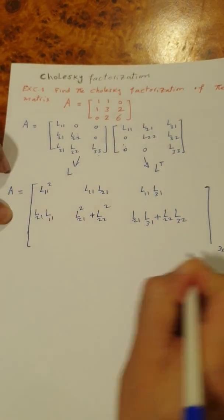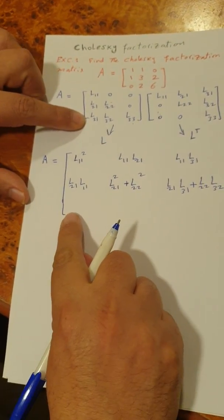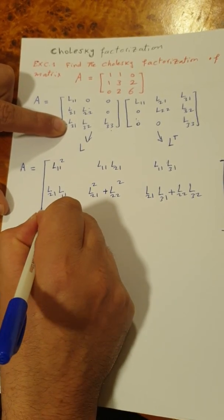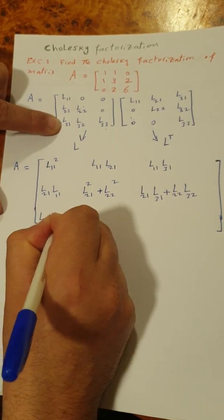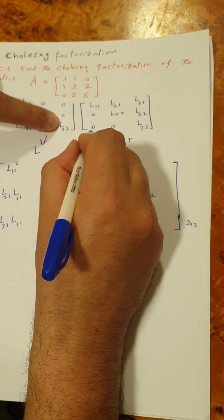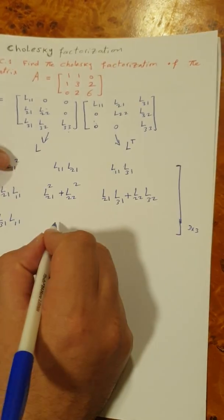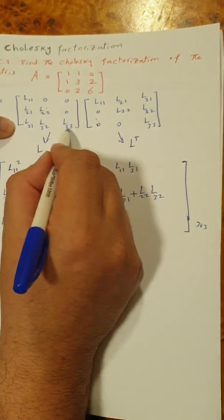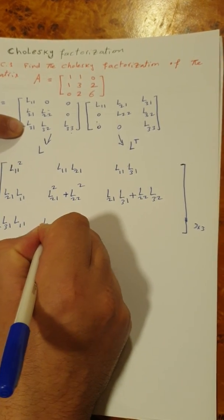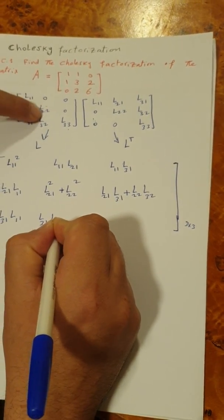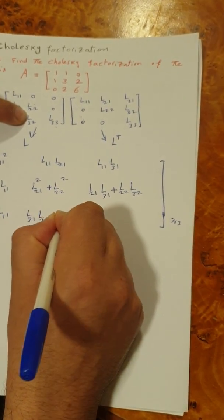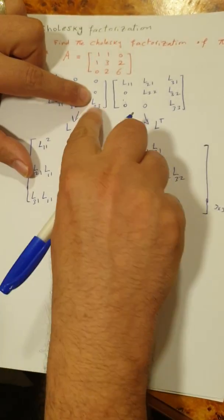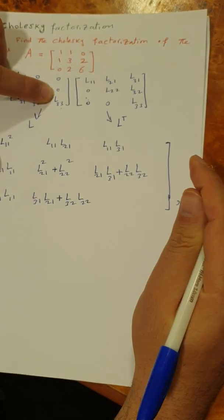To find the elements of the third row, we multiply the third row by the first column: L31 times L11, plus L32 times zero, plus L33 times zero, giving L31 times L11. For the second element of the third row, we multiply the third row by the second column: L31 times L21 plus L32 times L22 plus L33 times zero.